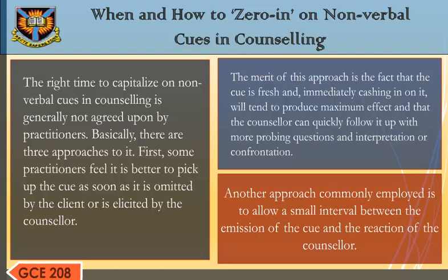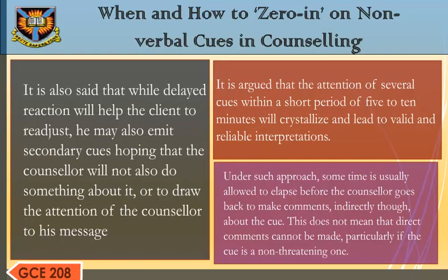Another approach commonly employed is to allow a small interval between the emission of the cue and the reaction of the counselor. It is said that during this delayed reaction, the client may readjust or emit secondary cues, hoping to draw the counselor's attention to his message. It is argued that the accumulation of several cues within a short period of 5 to 10 minutes will crystallize and lead to valid and reliable interpretations. Under such an approach, some time is usually allowed to elapse before the counselor goes back to comment, indirectly, about the cue.